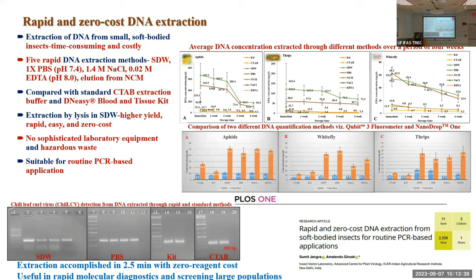We found that the DNA concentration from the rapid methods was higher than that from kit and CTAB-based methods, though the quality was not as high. We tested these using a NanoDrop and fluorometer. DNA extracted through simple distilled water and PBS showed similar quality to kit and CTAB methods. Importantly, isolating DNA from sterile distilled water involves no cost — it is essentially just water.